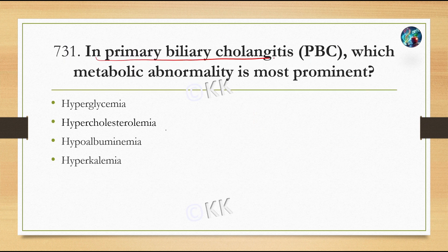In primary biliary cholangitis, which metabolic abnormality is most prominent? Option A, hyperglycemia. Option B, hypercholesterolemia. Option C, hypoalbuminemia. Option D, hypercholemia. The correct option is Option B, hypercholesterolemia.